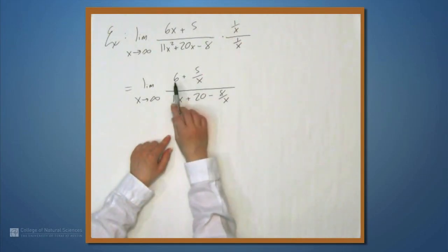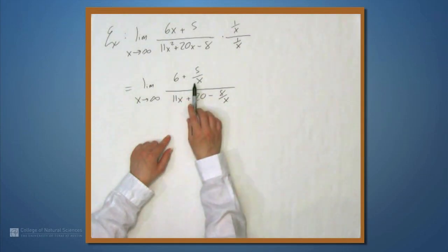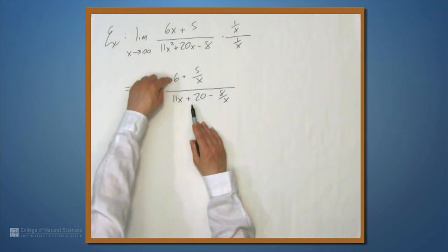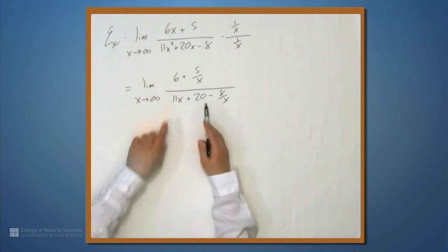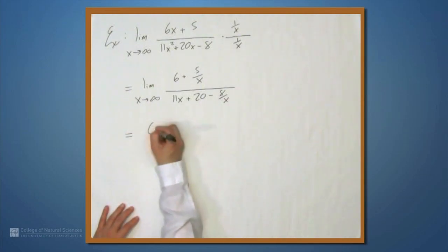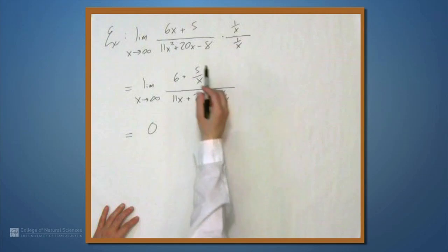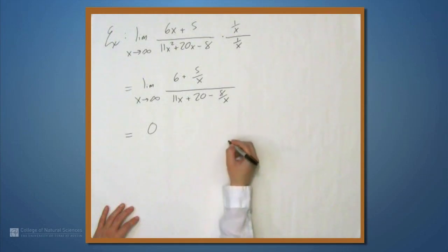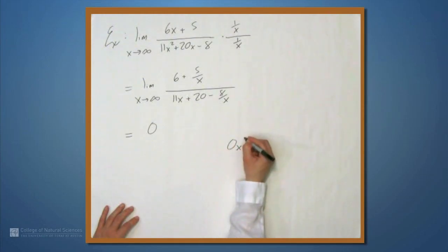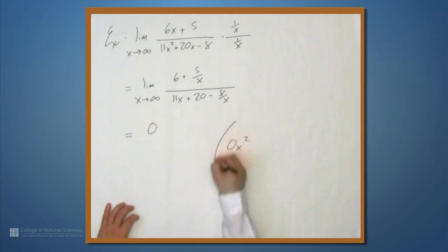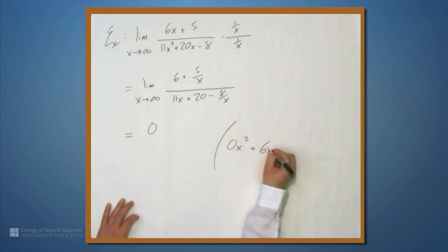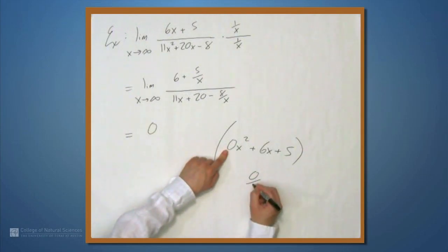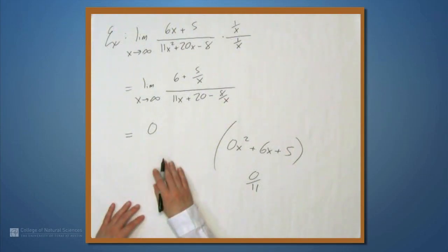In the numerator we have something approaching 6, and this 5 over x goes to 0. But in the denominator we have this 11x term, which is going to infinity. So we have something going to 6 divided by something going to infinity — this limit is 0. You can think of this as following the same pattern as before, if you think of there being a 0x squared term in the numerator: 0x squared plus 6x plus 5. The answer is like the leading coefficient ratio: 0 over 11.